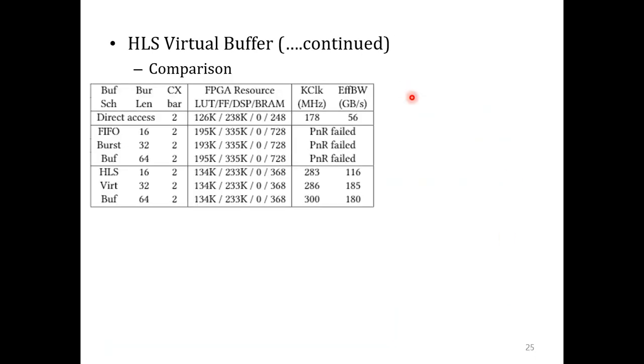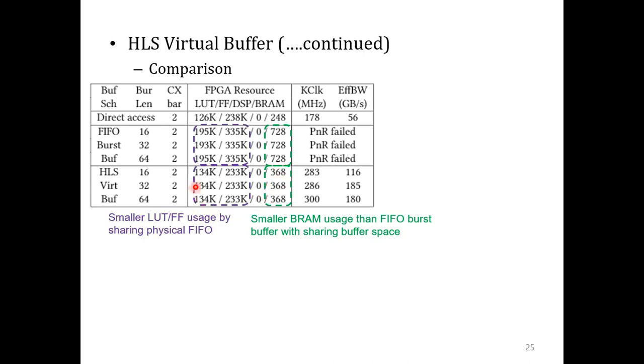Let's look at the comparison data. HLS virtual buffer uses fewer BRAMs than the FIFO-burst buffer because it shares the buffer space among many different PCs. Moreover, it uses a smaller number of LUTs and flip-flops because it shares a single physical FIFO. Using a single physical FIFO also eases the PNR process. As a result, we obtained a much higher effective bandwidth compared to the conventional direct access HLS coding style. You can also see that the effective bandwidth increases with larger buffer size until about 32 or 64.